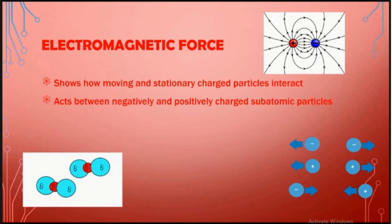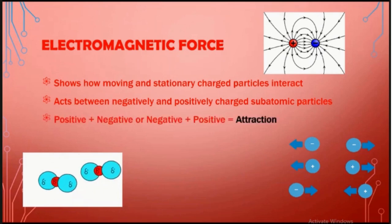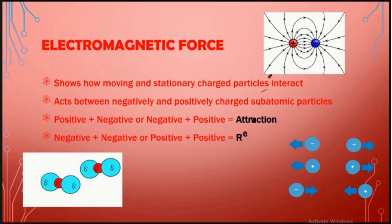Electromagnetic force acts between negatively and positively charged subatomic particles. The negatively charged particles are called electrons and positively charged ones are called protons. That's why electromagnetic force is known as electromagnetic force. And now, like magnetic force, the unlike poles or in this case unlike particles will attract, and the like particles or the similar ones will repel.